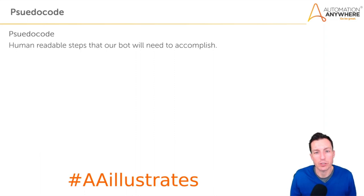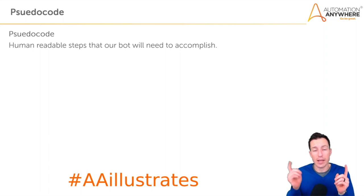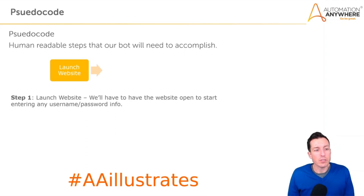Pseudocode — if you're not familiar with this term, pseudocode is human-readable steps that our code or bot will need to accomplish. I always like to start with pseudocode even from a mental standpoint. When I'm solving a new problem or building a new automation, I start with pseudocode. It helps me list out exactly what my bot needs to do in what order, and it also helps me as I'm finishing the bot as a checklist to make sure I accomplished each goal.